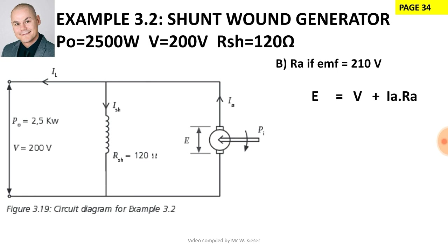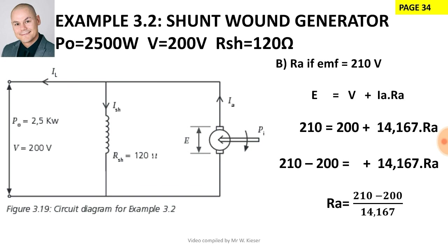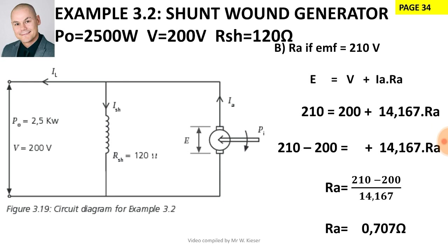Part B: calculate the armature resistance if the generated EMF is 210 volts. The generated EMF is produced by the armature. Substituting values: generated EMF = 210 V, terminal voltage = 200 V, armature current = 14.167 A. Rearranging: RA = (generated EMF − terminal voltage) / armature current = (210 − 200) / 14.167 = 0.707 ohms.